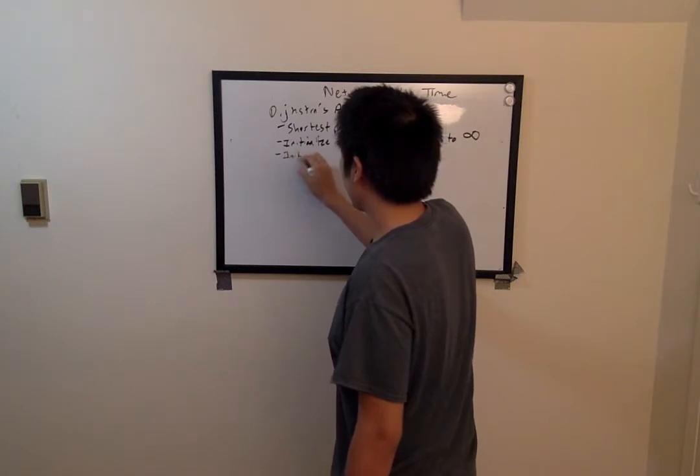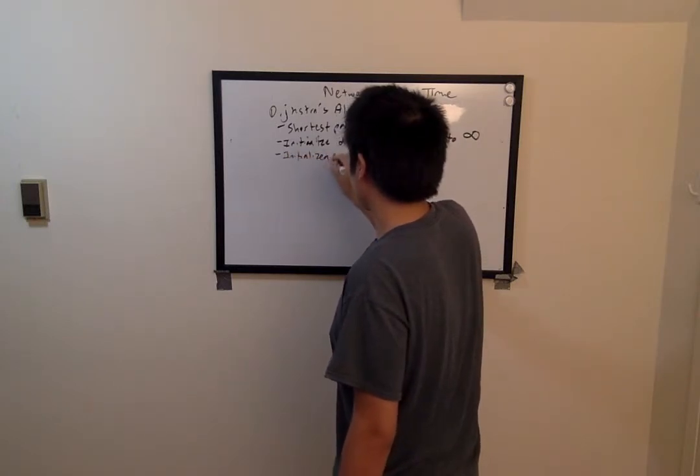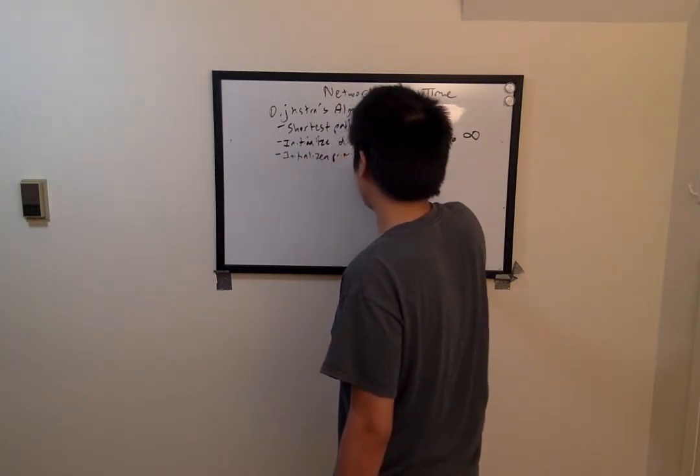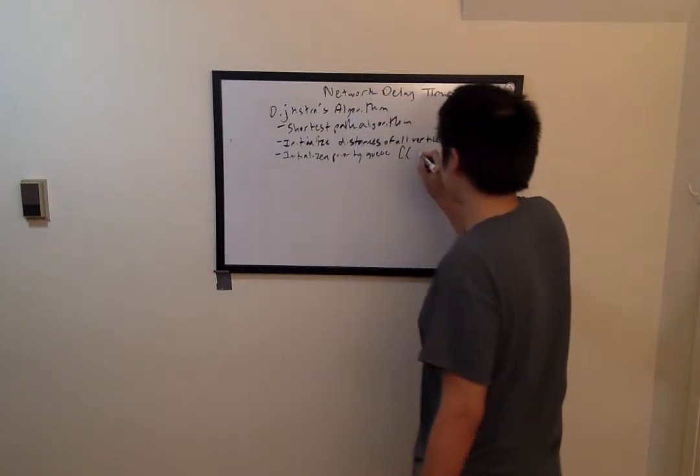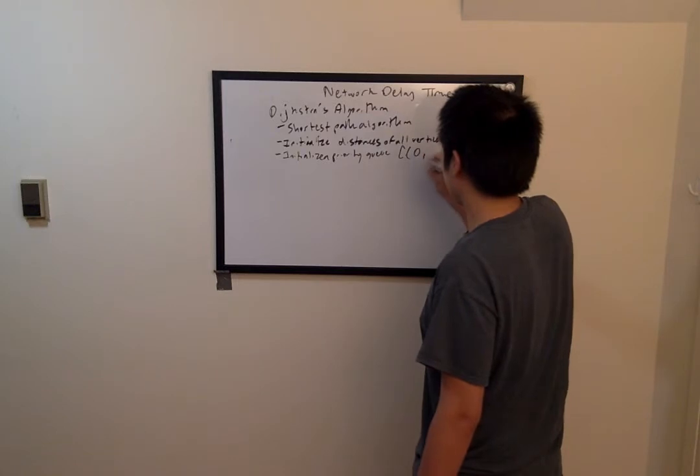Then initialize a priority queue. And enqueue the source vertex with a distance of 0.